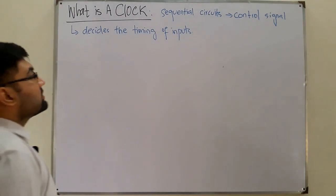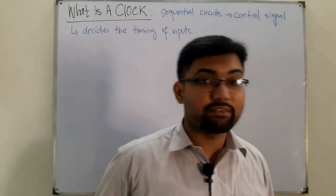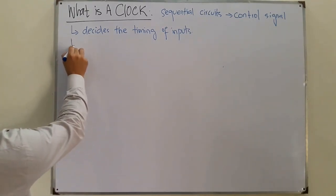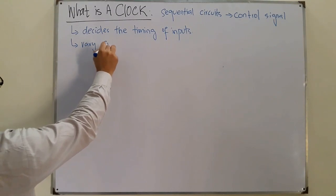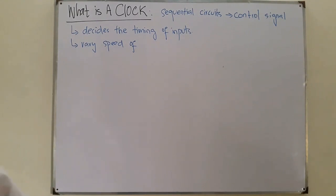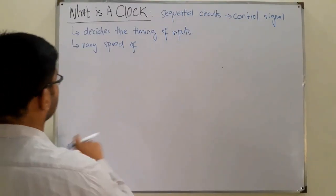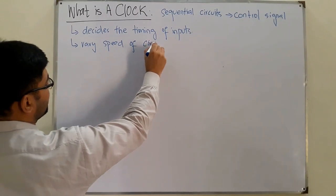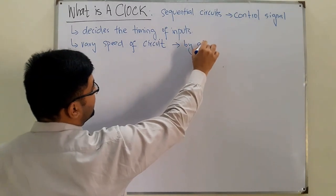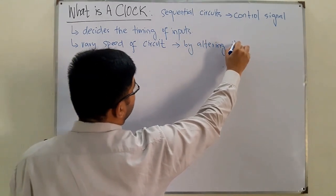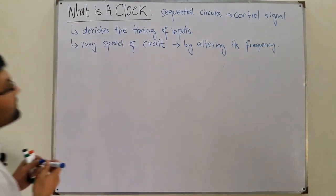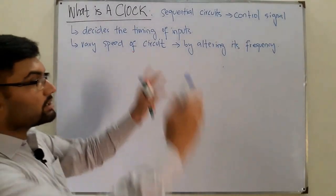This clock controls the timing of the inputs. Also, we can vary the speed of the circuit with the help of the clock — and how do we do that? By altering its frequency.